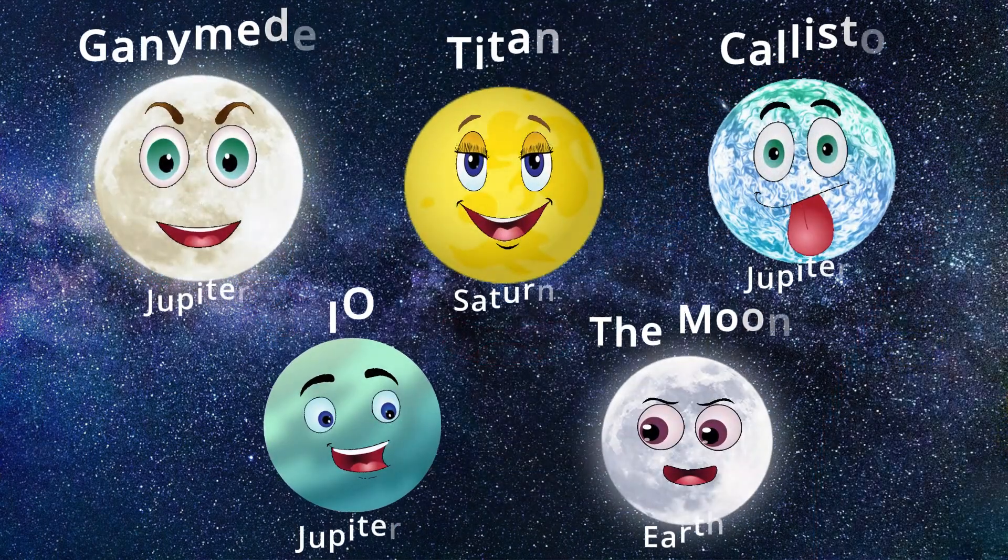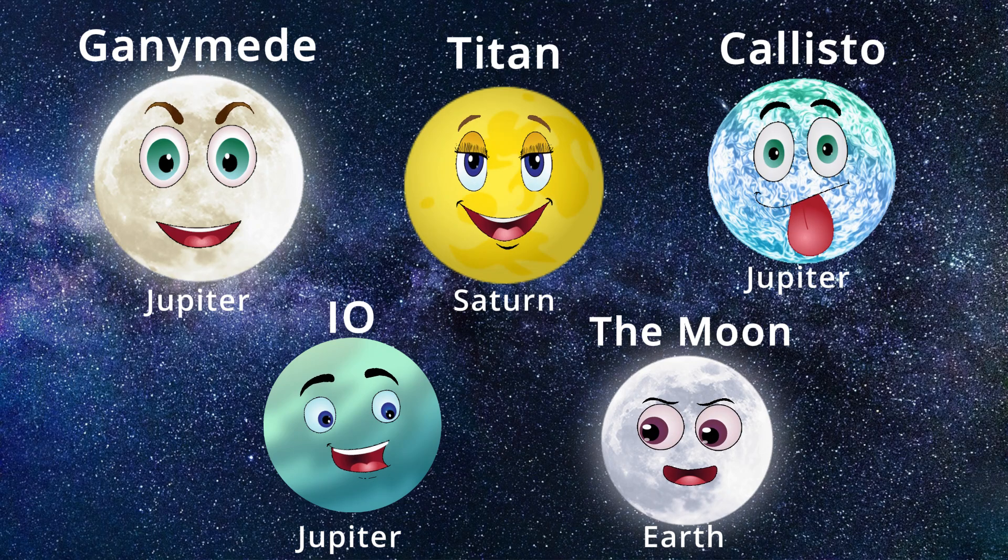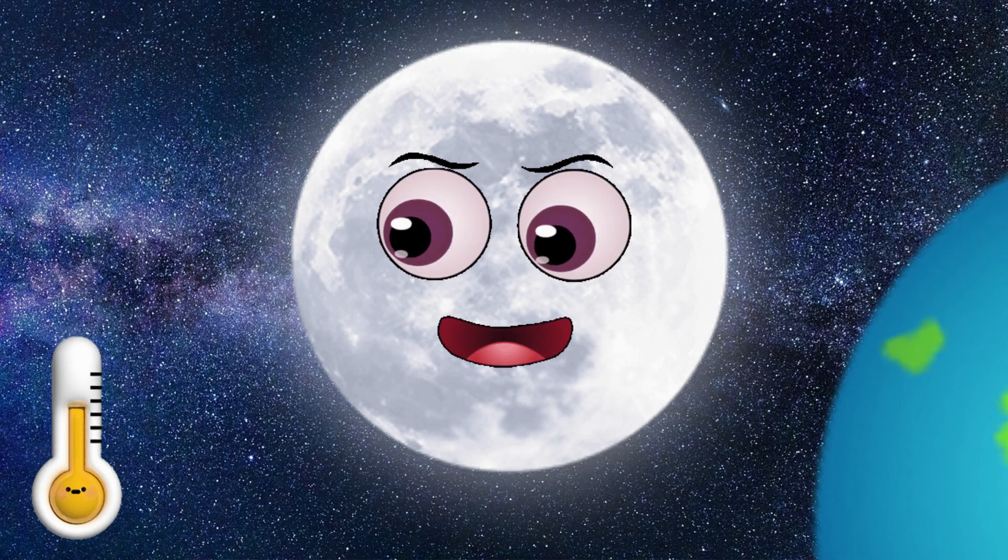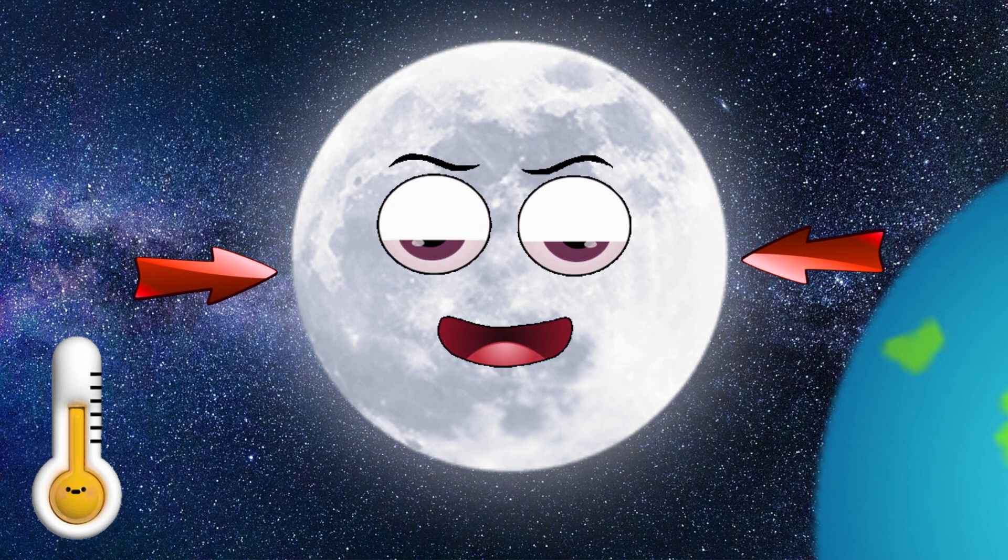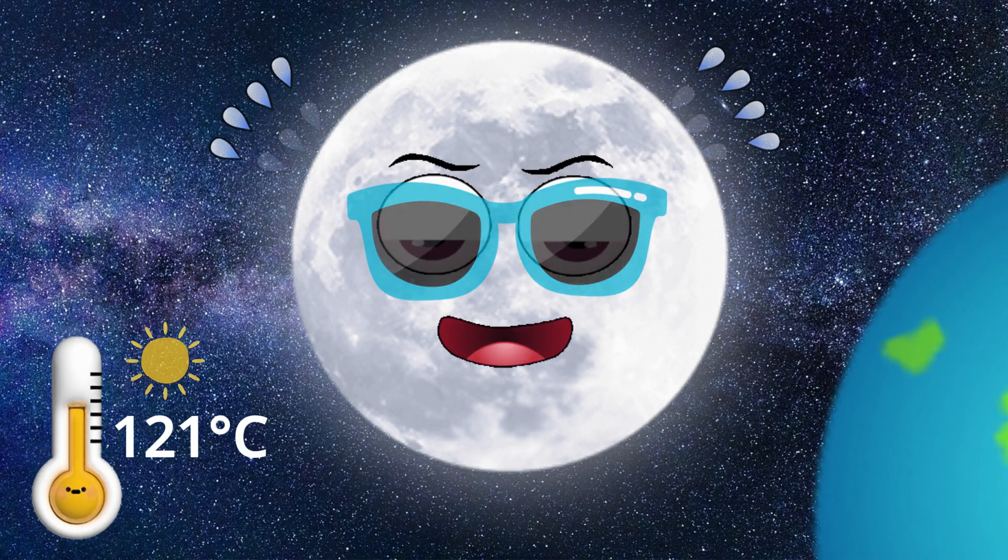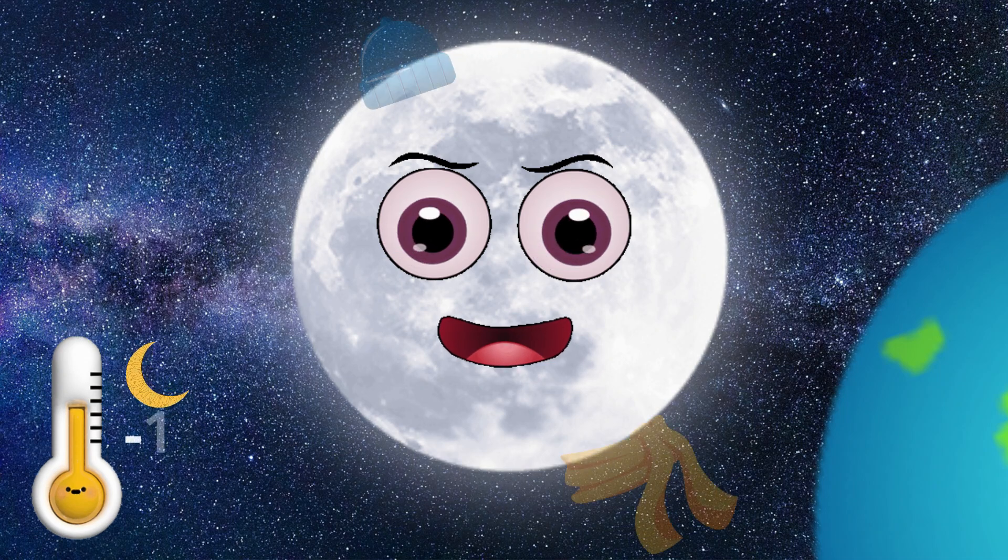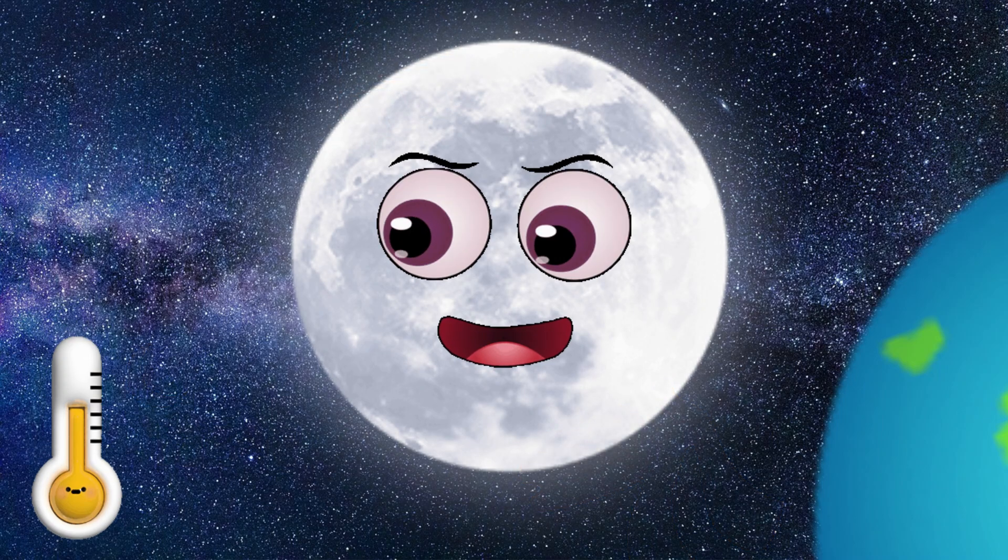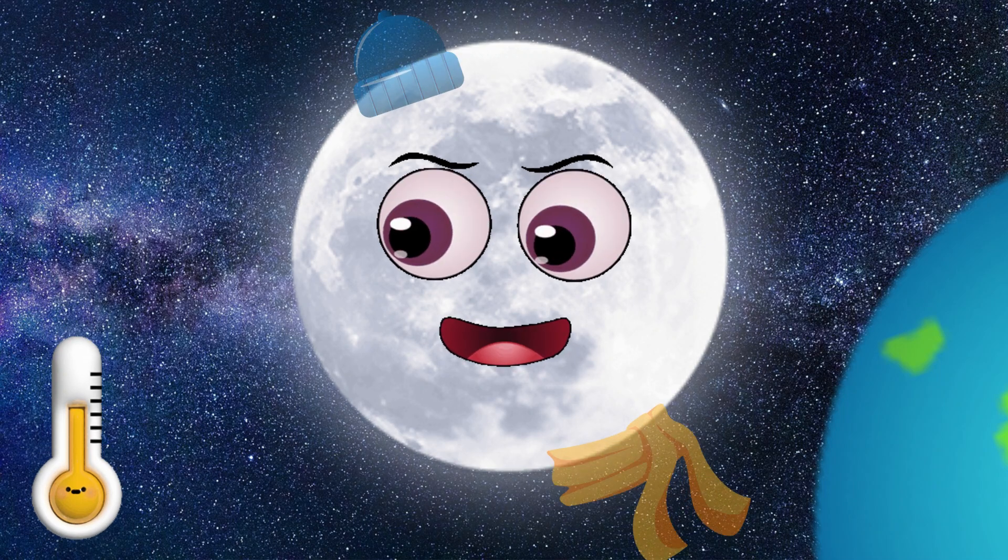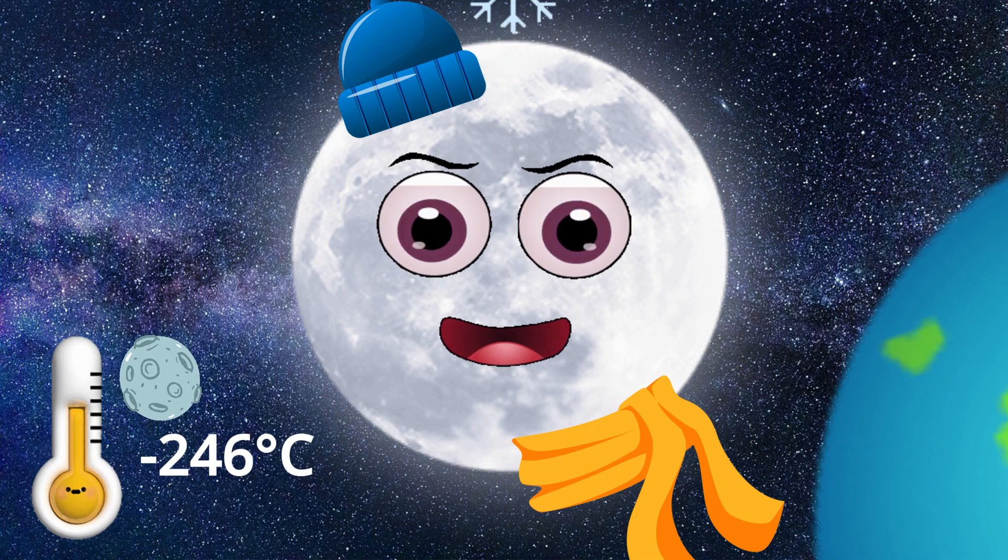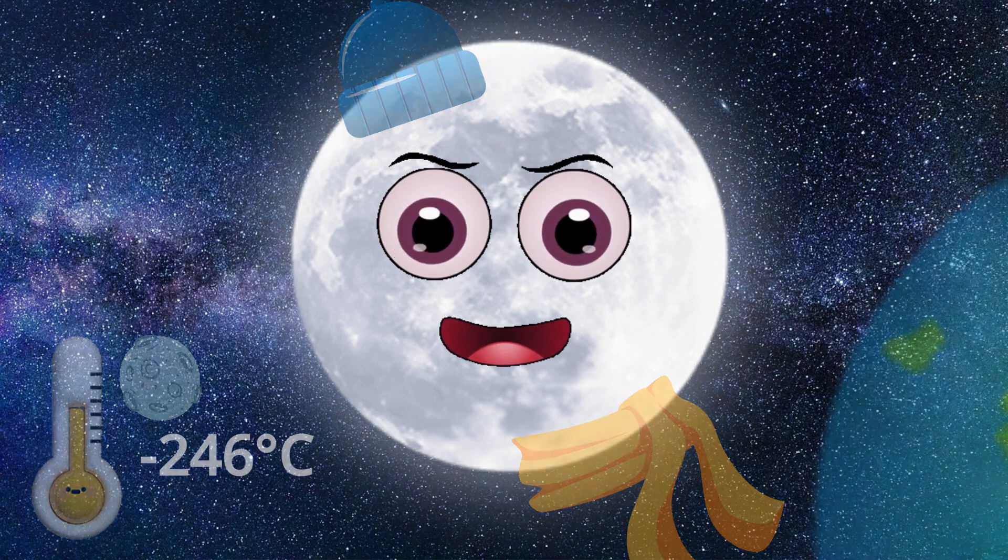Our moon is the fifth largest moon in our solar system. And on our moon, the temperatures vary drastically. Near the moon's equator, it can spike to 121 Celsius in the daytime, then plummet at night to minus 133 Celsius. In the deep craters near the moon's poles, permanent shadows in these craters keep the surface even colder and have recorded temperatures of minus 246 Celsius.